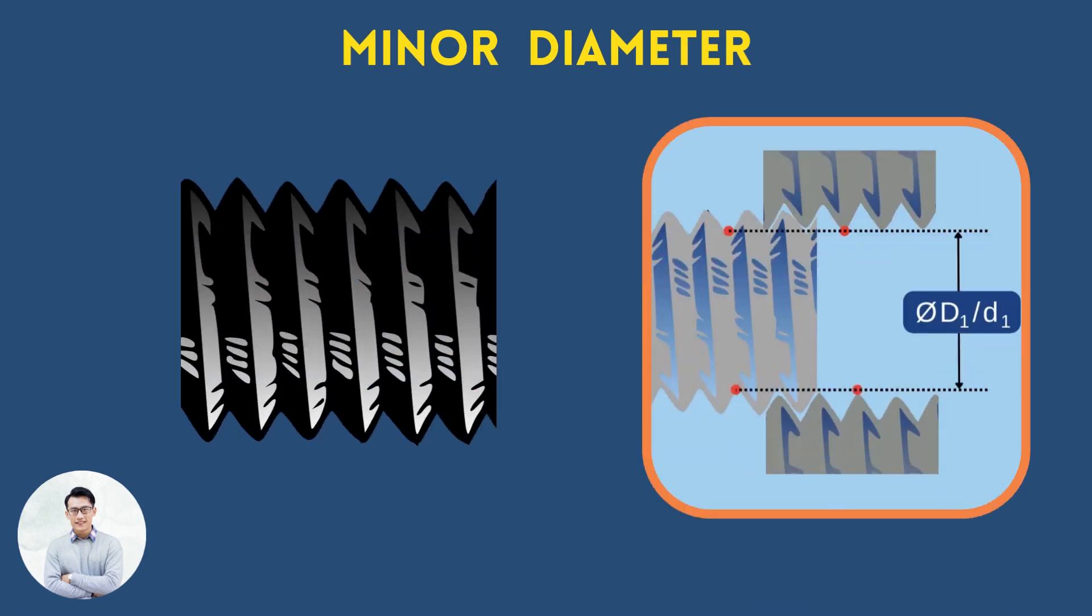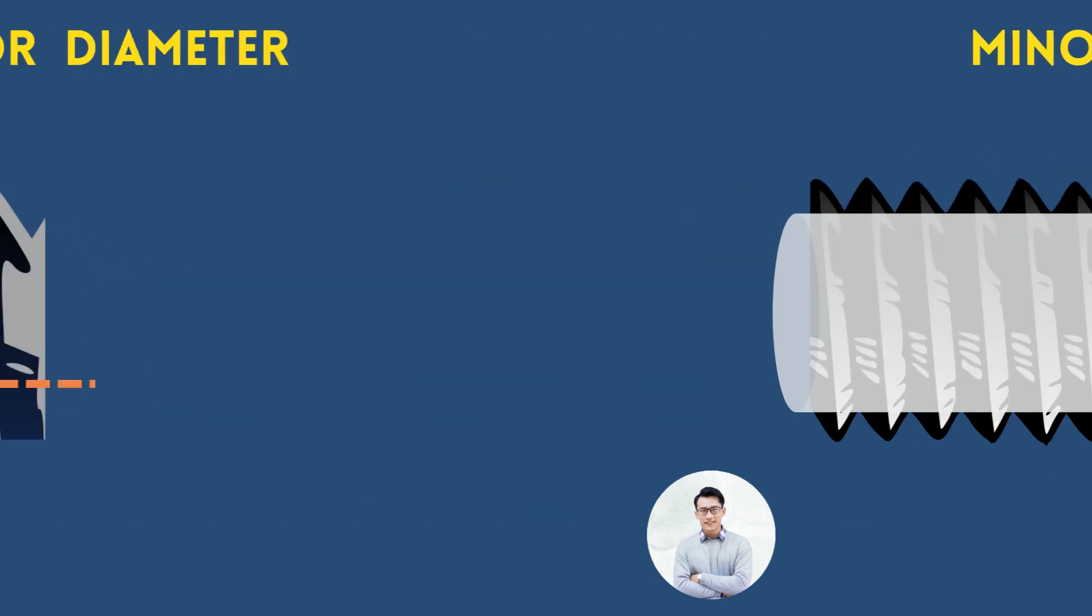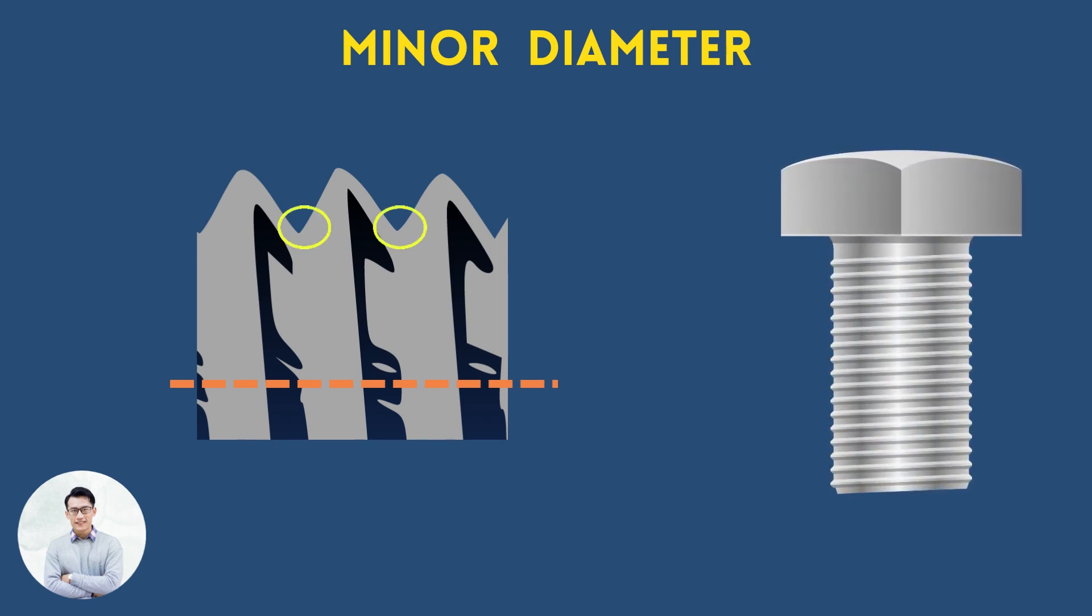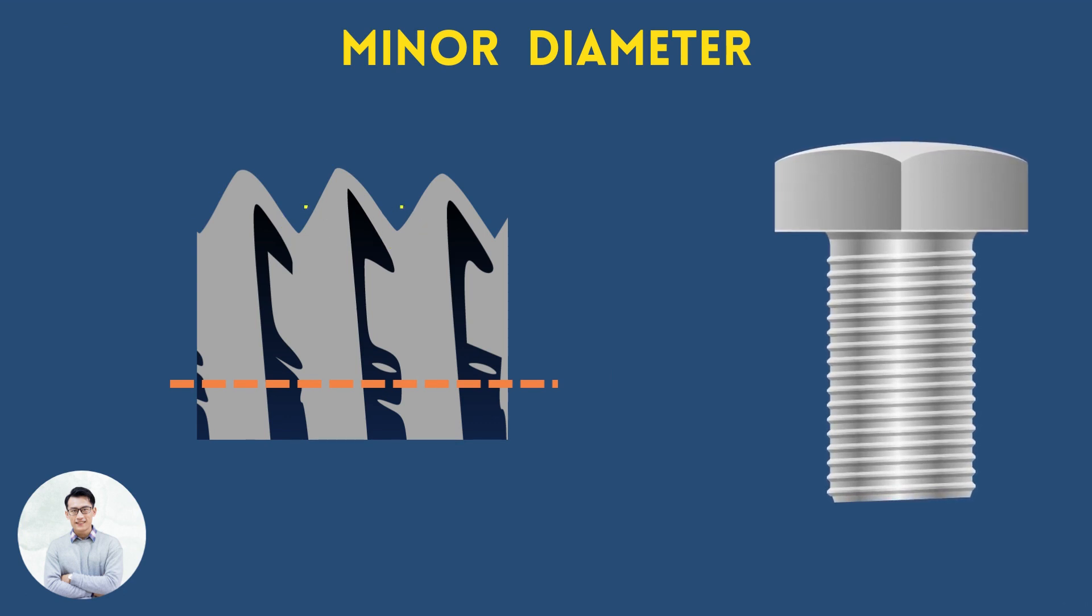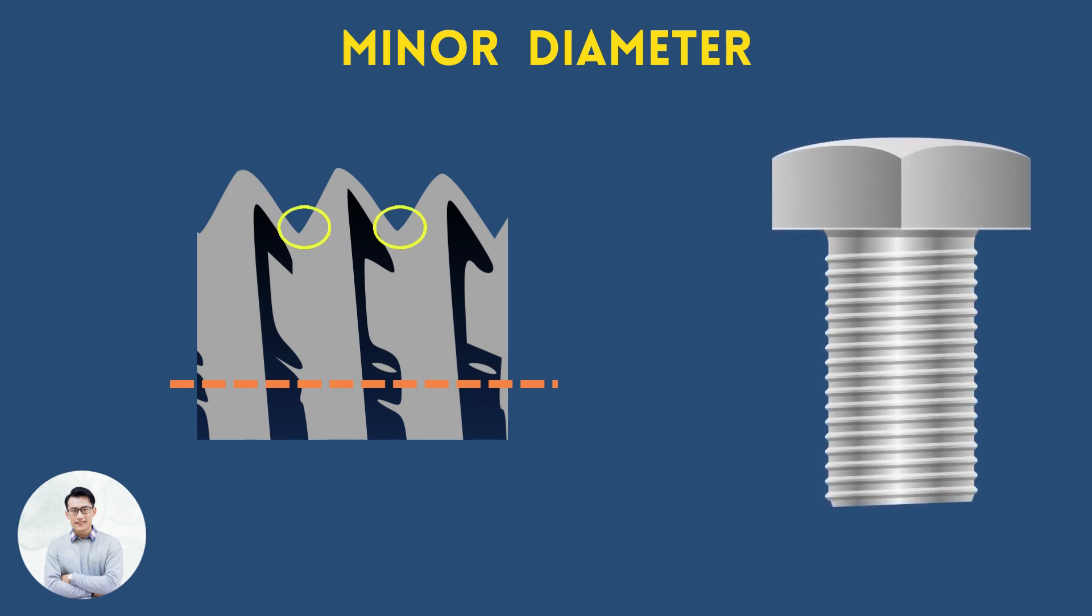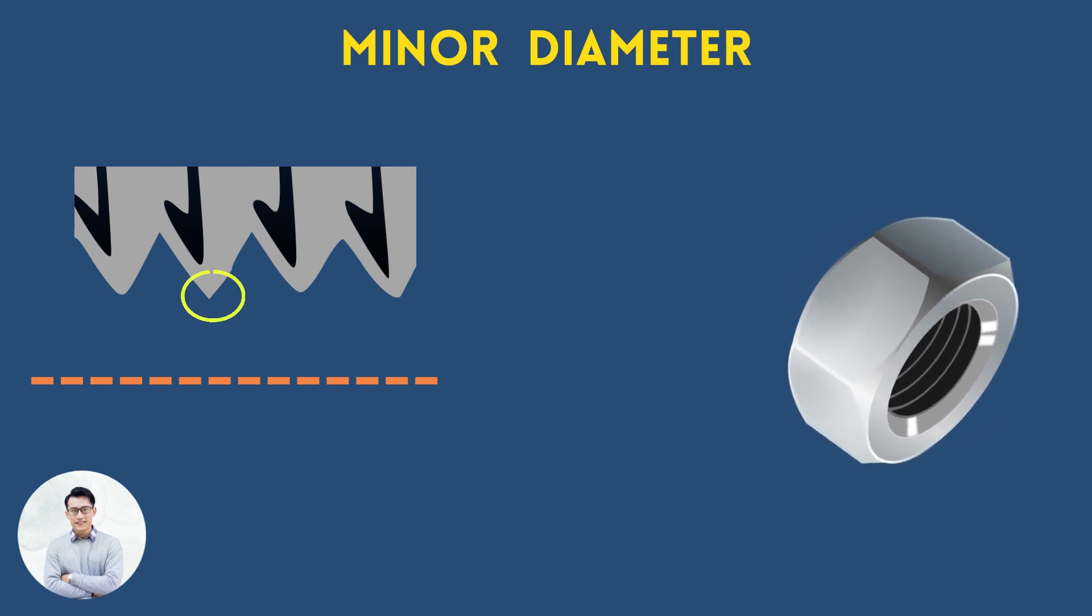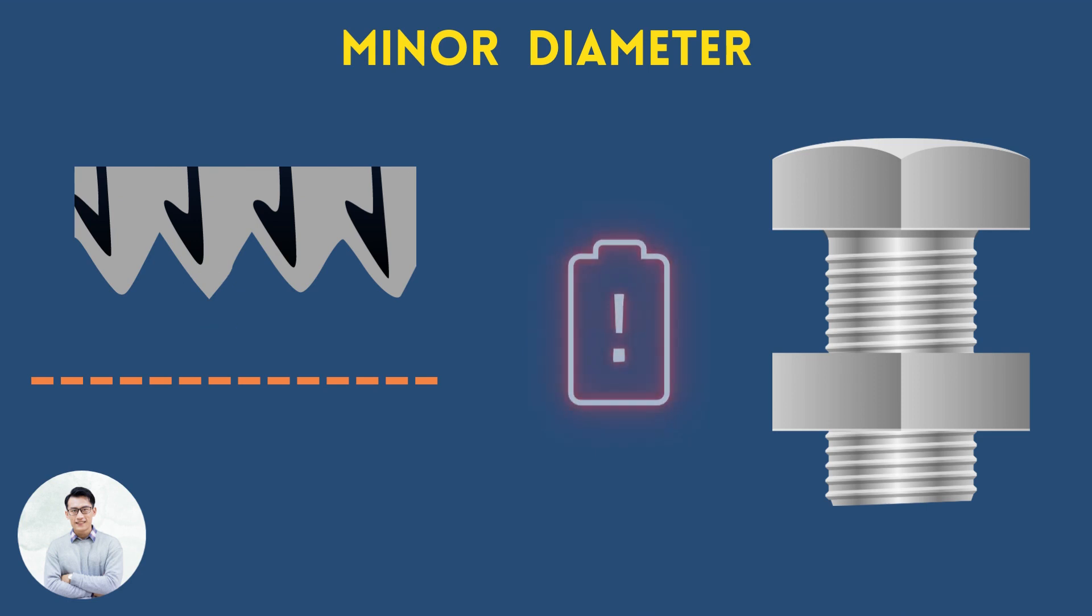The minor diameter is the diameter of an imaginary cylinder that touches the smallest diameter of a thread. In external threads, it is measured on the root. It is not a critical dimension and only has a maximum limit to ensure that the root is relieved. In internal threads, it is measured on the crest, and it is a critical dimension that affects whether a bolt fits on a screw.